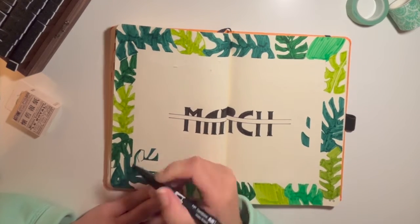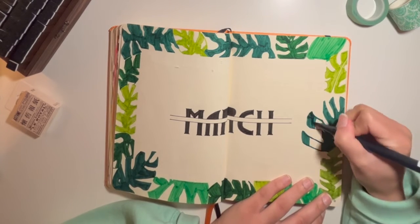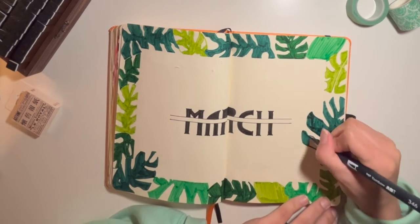And then I'm just filling in the leaves where the tape was so that I do have that kind of layered look, and you know, some of the leaves are coming in through the border.